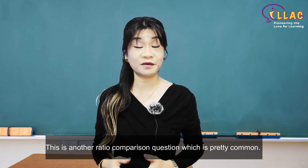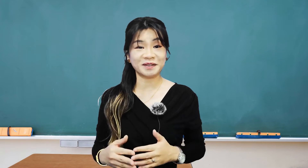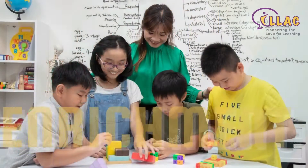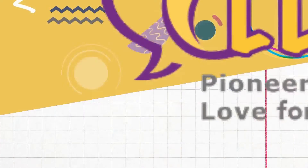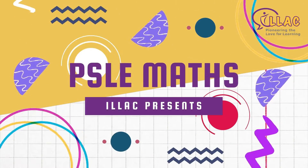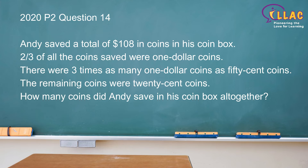This is another ratio comparison question, which is pretty common. Andy saved a total of $108 in coins in his coin box. Two-thirds of all the coins saved were $1 coins. There were three times as many $1 coins as $0.50 coins. The remaining coins were $0.20 coins. How many coins did Andy save in his coin box altogether?